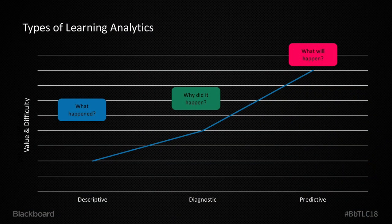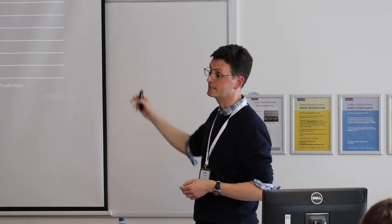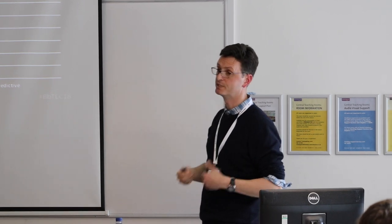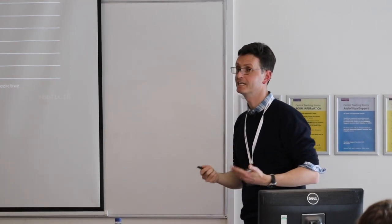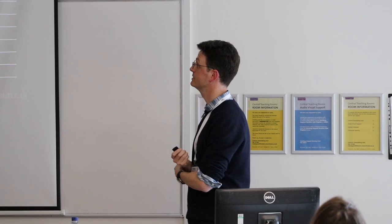A little bit about the types of learning analytics: descriptive analytics asks what happened; diagnostic analytics asks why did it happen; predictive analytics asks what will happen — and that's the hard thing to do. Predicting the likelihood of a student passing is a really hard thing to do.